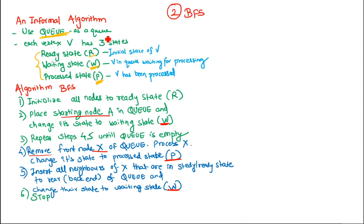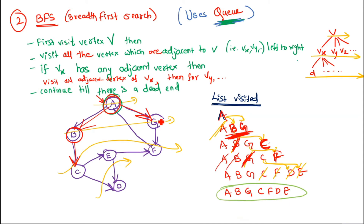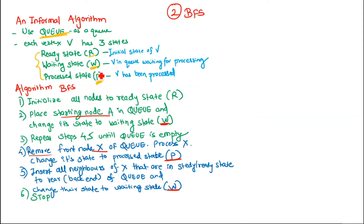For BFS we use a data structure called Q (the queue). Each vertex has three states to maintain in the queue: ready state (initial state), waiting state (it is in the queue waiting for processing), and process state (it has been written into the list and has been processed).